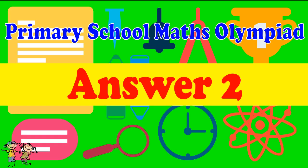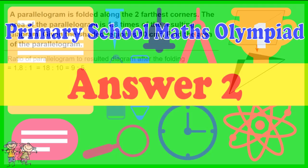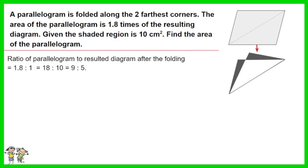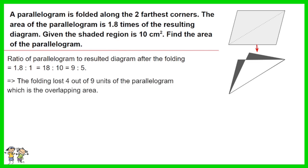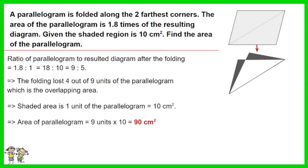Answer for Question 2. The ratio of the parallelogram to the resulting diagram after folding is 1.8 to 1, which is 9 to 5. The folding lost 4 out of 9 units of the parallelogram, which is the overlapping area. The shaded area is 1 unit of the parallelogram, equal to 10 cm². Thus the area of the parallelogram equals 9 units times 10, giving the answer of 90 cm².